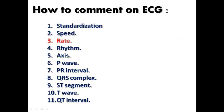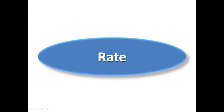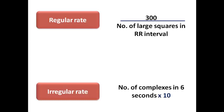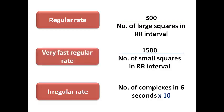The rate of the ECG — from undergraduate learning we know there are rules for calculating heart rate. If the rate is regular, divide 300 by the number of large squares in the RR interval. In case of irregular rate, count the number of complexes in six seconds and multiply by 10. In case of a very fast regular rate, you can divide 1500 by the number of small squares — 1500 comes from 300 multiplied by 5, the number of small squares in one large square. The first method, 300 divided by large squares in the RR interval, is the easiest, provided the rate is regular.